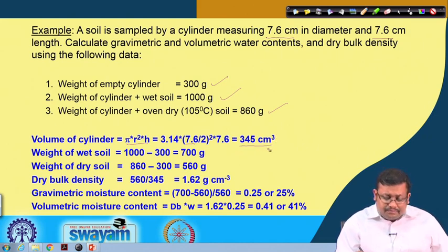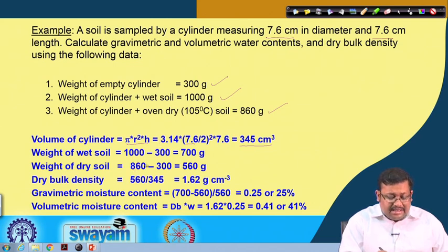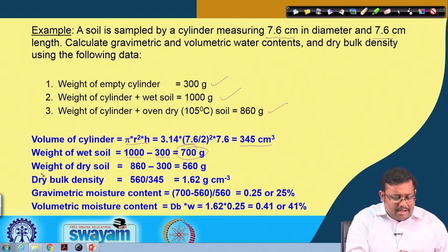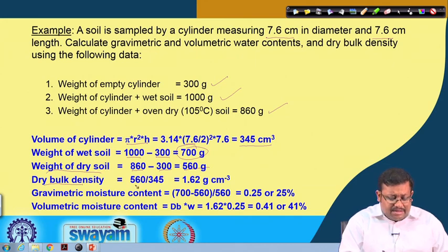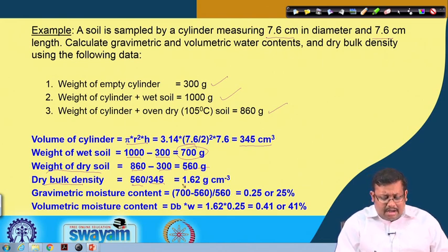The volume is 345 cubic centimeters. The weight of wet soil is weight of cylinder plus wet soil minus weight of empty cylinder, giving 700 grams. The weight of dry soil is 860 grams minus 300 grams, giving 560 grams. Dry bulk density is weight of dry soil over volume of cylinder: 560 over 345 equals 1.62 grams per cc.